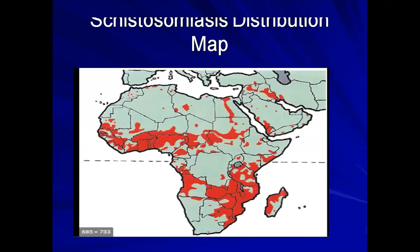This map shows the distribution of schistosomiasis, involving quite a number of countries around the tropics — countries like Togo, Benin, Somalia, Kenya, Egypt, the Great Lakes region including Uganda, Rwanda, Burundi, parts of Congo, Angola, Zambia, Zimbabwe, parts of South Africa, and parts of Botswana. This case is actually from Botswana.